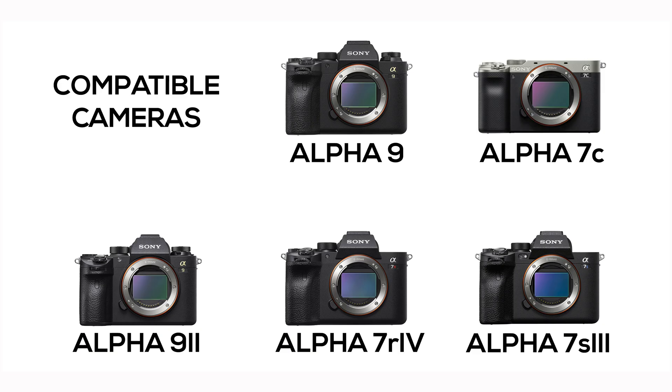The Visual Story app is currently available for iOS devices and is compatible with select Sony cameras, including the Alpha 9, 1 and 2, A7C, A7R IV, and A7S III. To get more information about the Visual Story app, as well as the additional storage plans, check out the link in the description of this video.